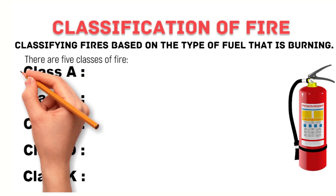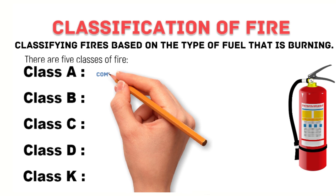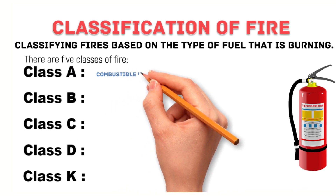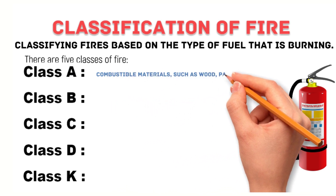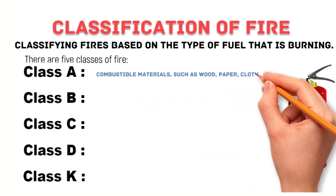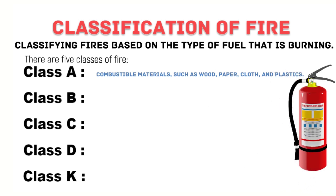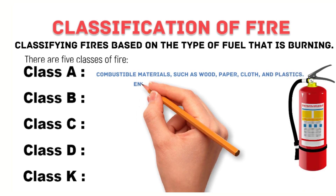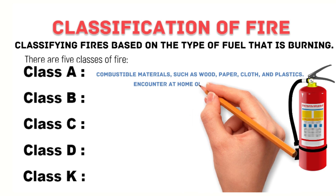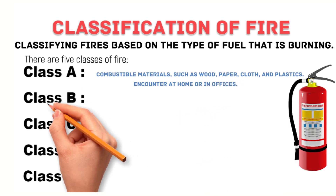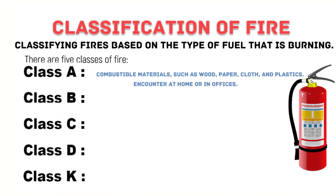Class A fires are fires that involve ordinary combustible materials such as wood, paper, cloth, and plastics. These are the most common types of fires you might encounter at home or in offices.